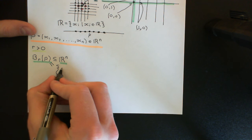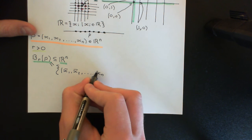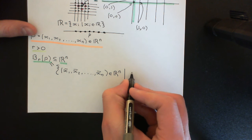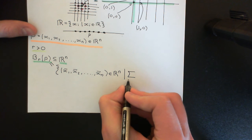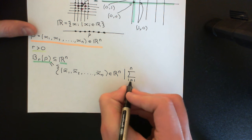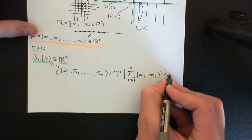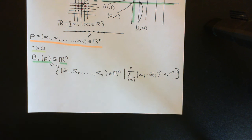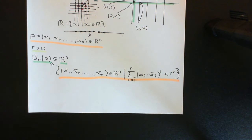The set is going to be all elements of Rn — x1 bar, x2 bar, all the way up to xn bar — which are n-tuples in Rn, such that a certain condition holds. This is where we're going to need the fact that the real numbers has addition, multiplication, and an order on it. The condition is: the sum from i equals 1 to n of (xi minus xi bar) squared is less than R squared.